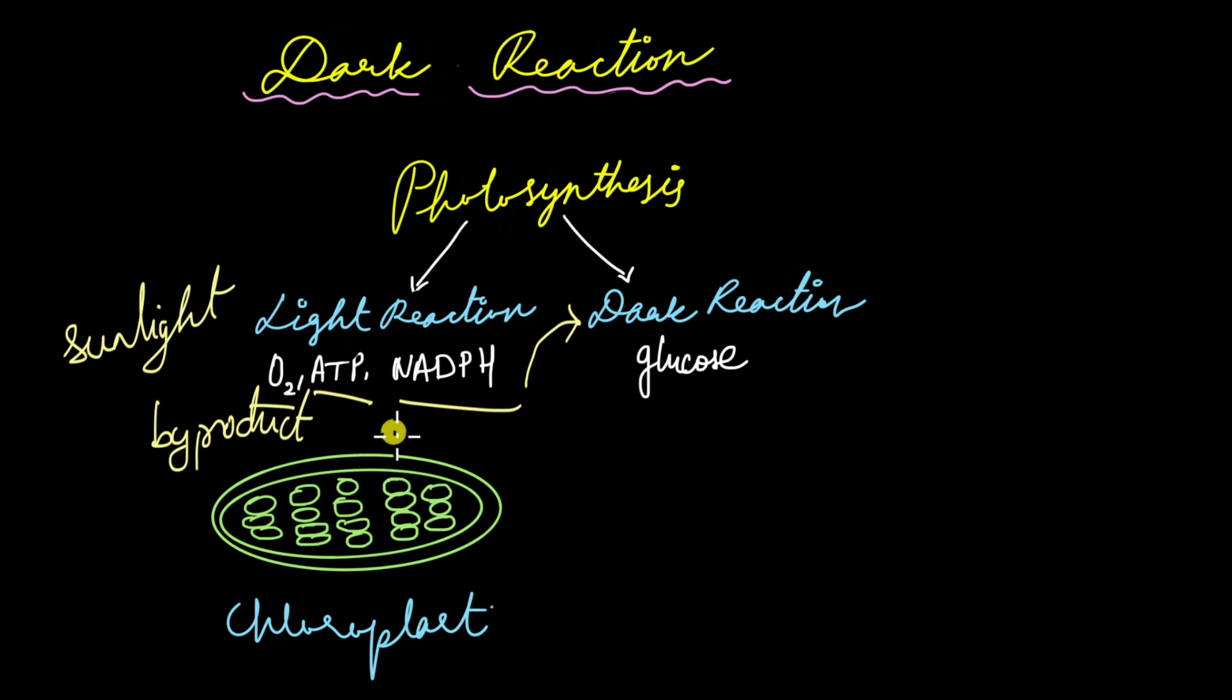From the previous video we learnt that both ATP and NADPH were released into the stroma of the chloroplast which is where this dark reaction is going to take place. Using ATP and NADPH and carbon dioxide from the atmosphere, plants are finally going to be able to produce glucose which they can then break down to produce energy for their day to day activities.